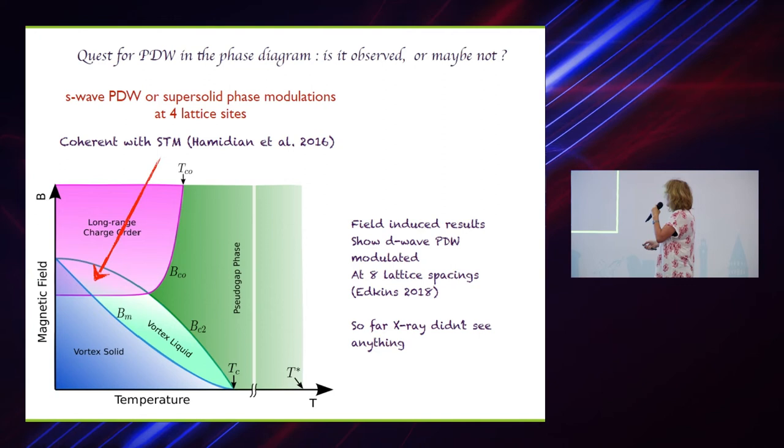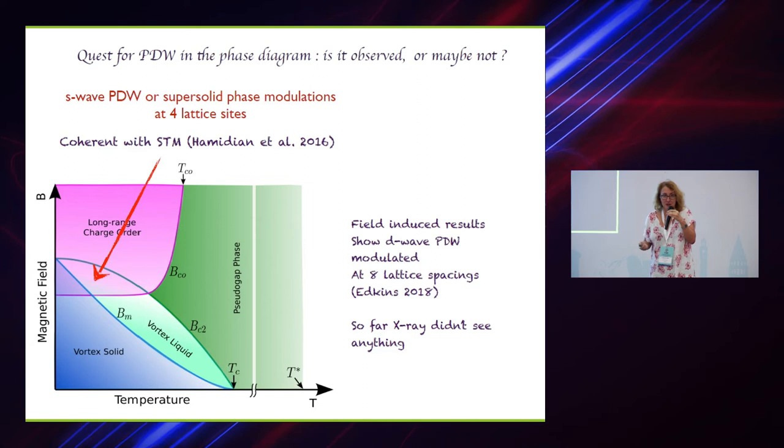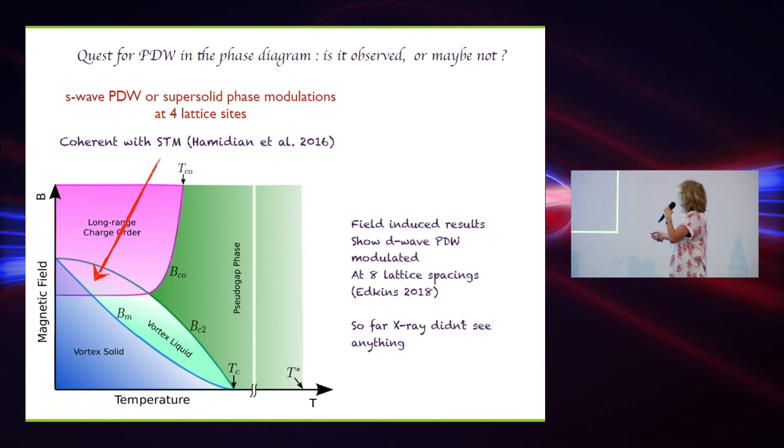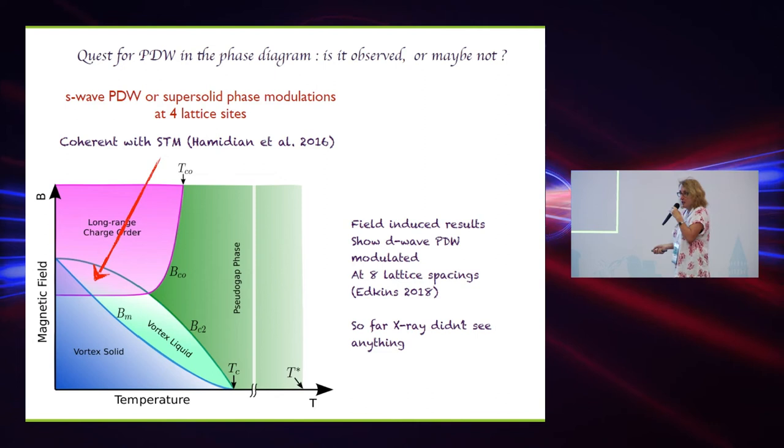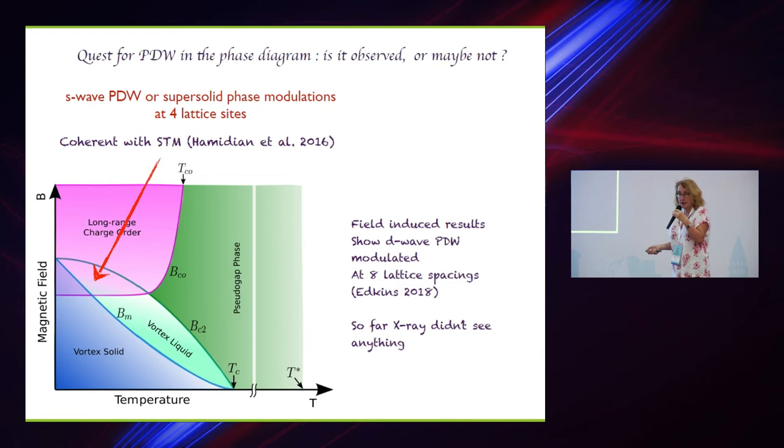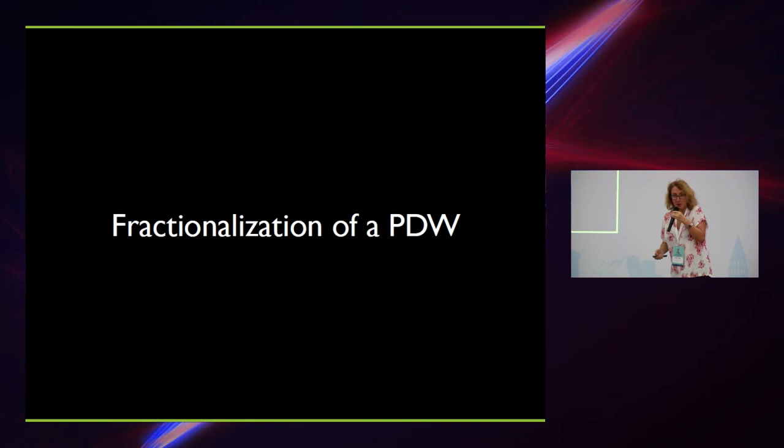Something which is very interesting with current theories is when you have coexistence like that, you generate pair-density waves. And that's even not with this kind of entanglement, but with competition, you generate the pair-density wave, which is the symmetry of coexistence of charge order and superconductivity. But, you generate at four-lattice sites. And there is a discussion that it has been observed at eight-lattice spacing by STM, which, if it confirms that experimentalists agree on that, would kill the SU(2) theory. But, so far, X-ray didn't see anything at eight-lattice spacing. They saw things around four-lattice spacing.